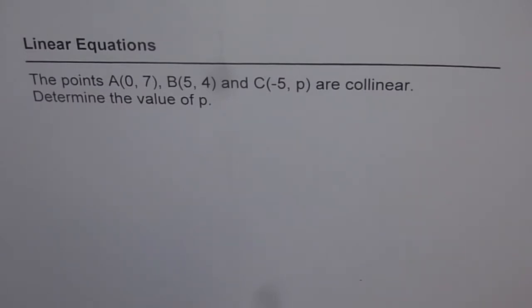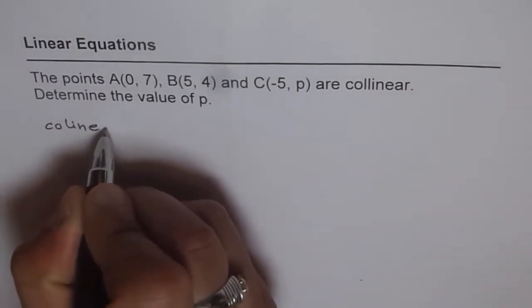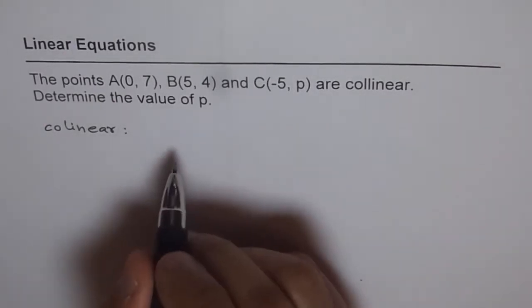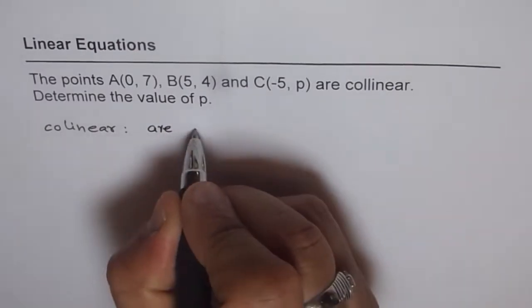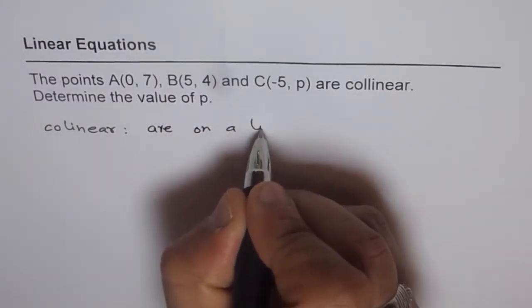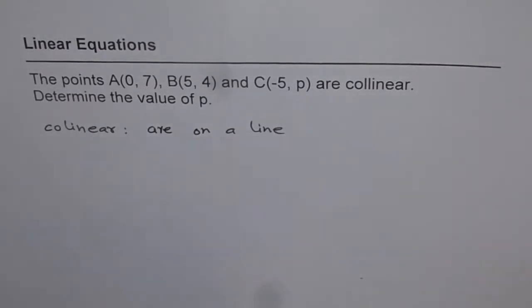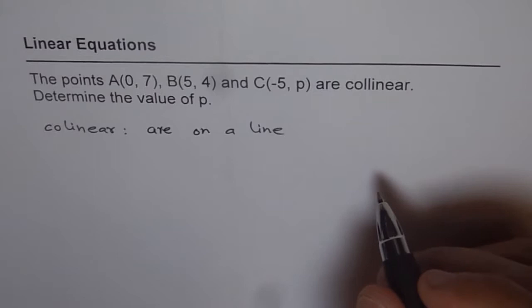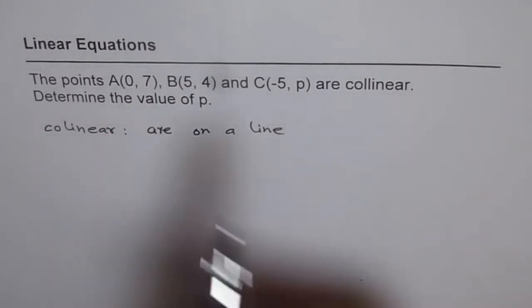Now, let us first understand what collinear means. Collinear means the three points lie on a line. So they are on a line, that means they are collinear. That is how you have to think about it. Basically, it means that between any two points, you can always draw a line.